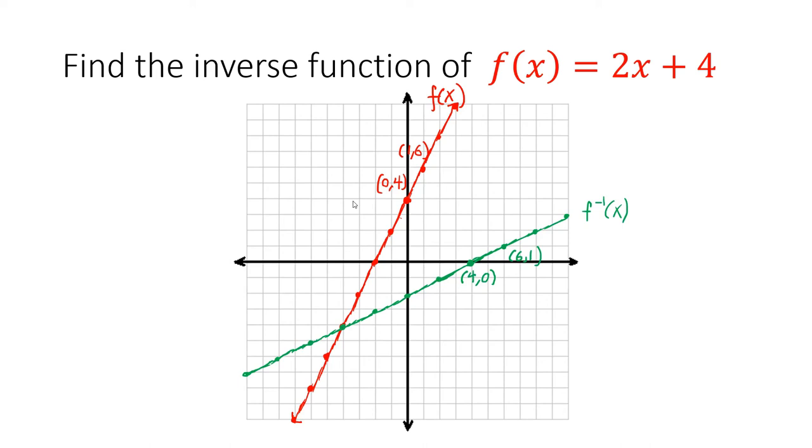So these are f(x) and f inverse. Do you notice anything about these graphs? They are being reflected over the equation y = x, which is a diagonal line on the graph. And it makes sense why they will be reflected over the graph y = x, because after all, we just swap y and x.